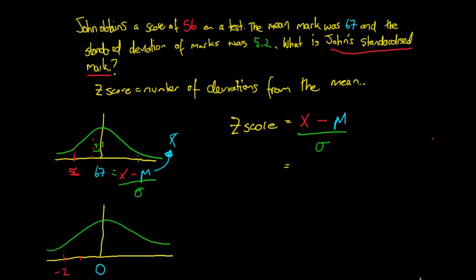So we can say that for our z-score, our x value is going to be our 56. We just define our term. So our x will be 56, our mu will be equal to 67, and our sigma will be equal to 5.2, which is our standard deviation.